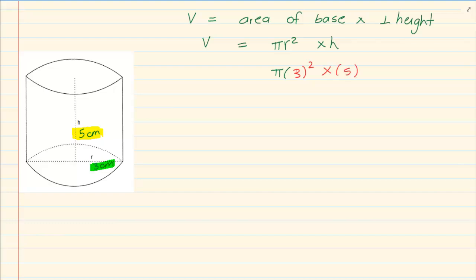So now it is 3 squared which is 9. 9 times 5 is 45 and then you are going to leave it as pi. And your answer is going to be centimeter cubed.